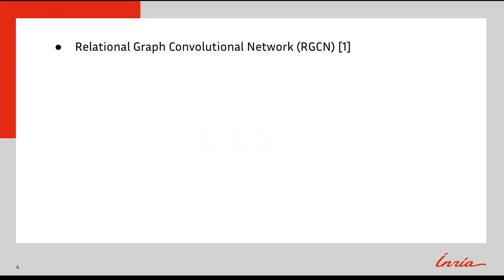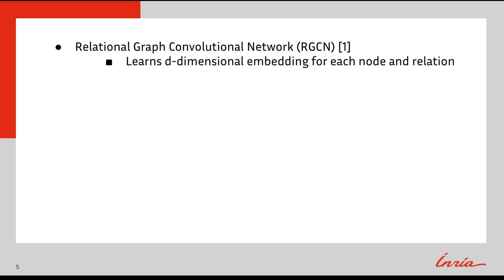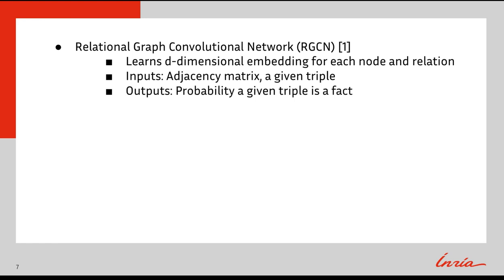A relational graph convolutional network is an adaptation of a graph neural network specifically for knowledge graphs. This model learns a d-dimensional vector representation for each node and relation in a knowledge graph. This model takes as input an adjacency matrix and a given input triple, and outputs the probability that the given input triple is a fact.